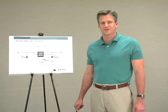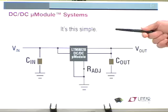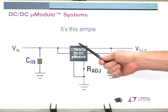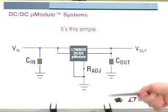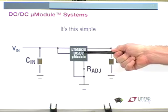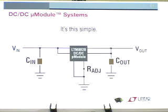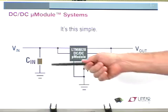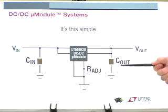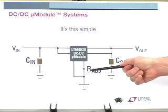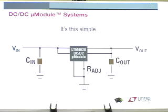Let's look at a simple design example. In this simple design, we can see a fully integrated package combining all of the complex regulator circuitry with the simplicity of a linear regulator design. As you can see, this design requires just one input capacitor, an output capacitor, and a programming resistor — which is very similar to a simple linear regulator solution.